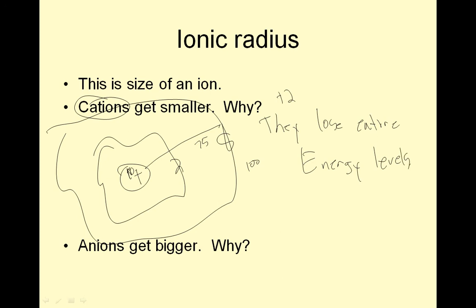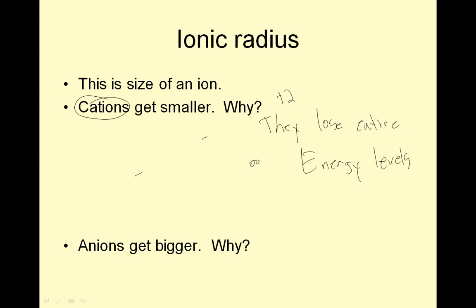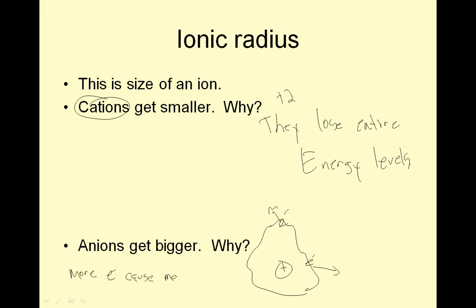Anions get bigger. Why? If I have a shell of electrons, I've got my positive nucleus, and I'm looking at a particular shell with one electron, and I sneak in another electron — these two electrons repel each other, and if they repel each other, they actually get bigger. Anions get bigger because more electrons cause more repulsion.